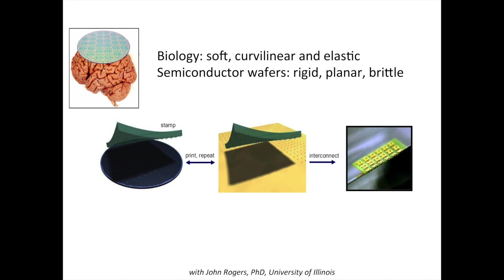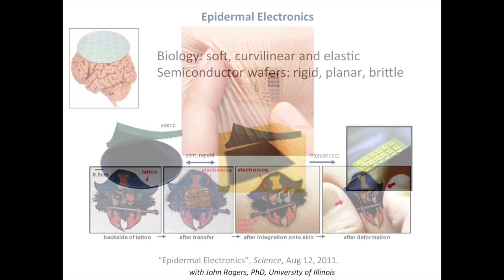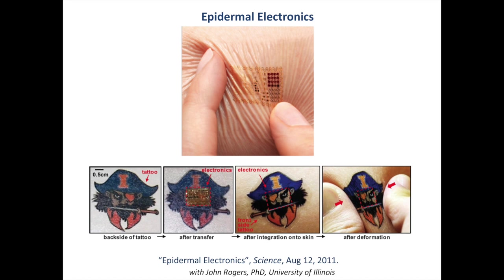This led us to developing electronic sensors that are bio-integrated. What makes that challenging is that biology is soft, curvilinear, and elastic, whereas electronic circuits are built with semiconductor wafers that are rigid, planar, and brittle — a fundamental disconnect. The epiphany, working with material scientists, was that you can take a semiconductor wafer — which acts primarily like a skillet in cooking, serving a role in fabrication but not in the final product — and peel off just the functional top layer and integrate it onto something naturally bendable.